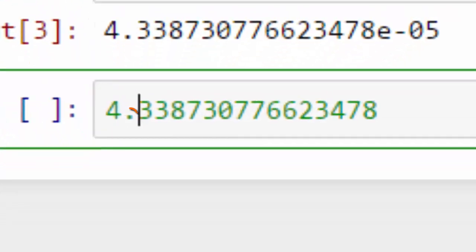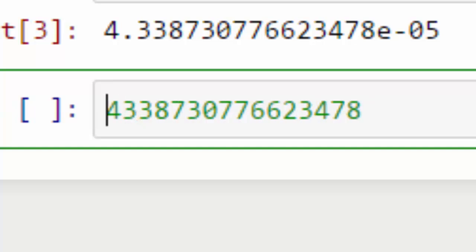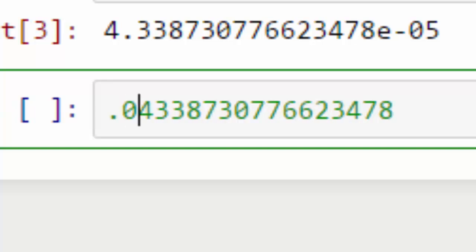So we take this decimal point, get rid of it, and we have to move it to the left five times. So if we put it there, that's moving it one time. So in order to move it another time, we need to put a zero in front of that. That's two times, three times, four times, five times.